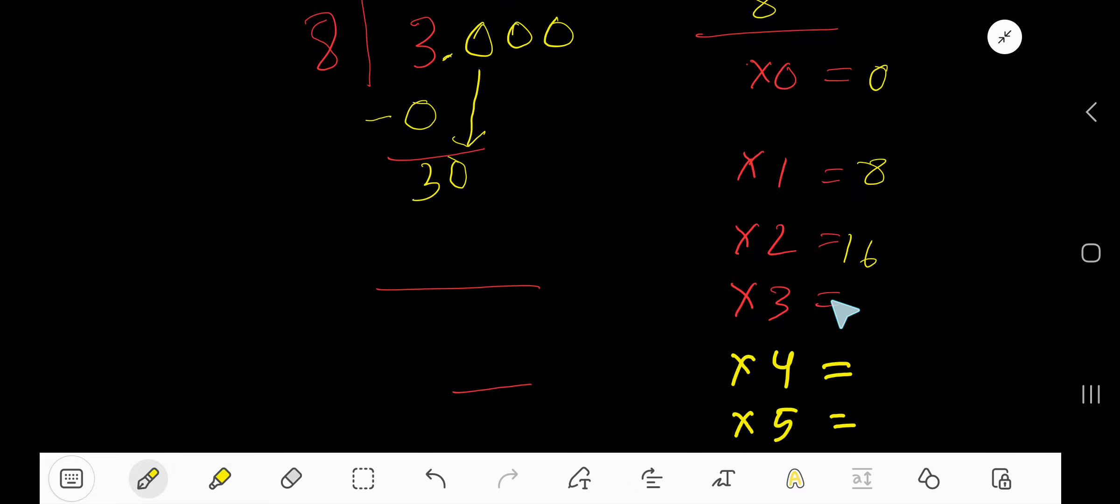8 times 3 equals what? Just add 8 with the previous 16, that's 24. Then 8 times 4, just add 8, equals 32.